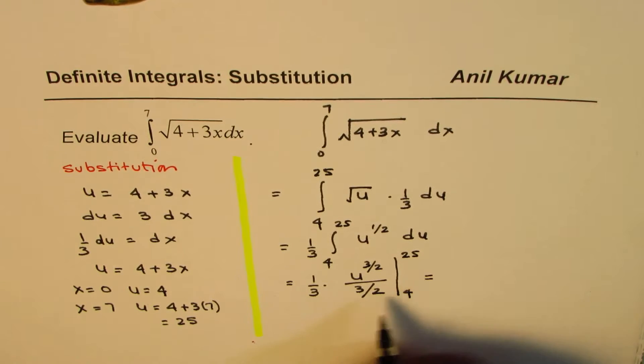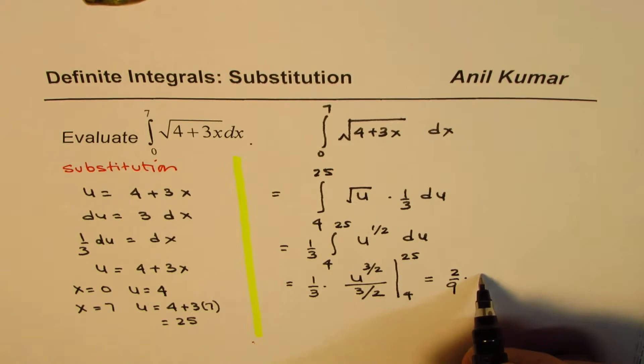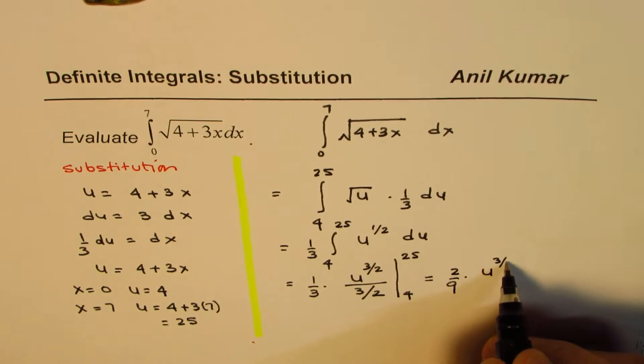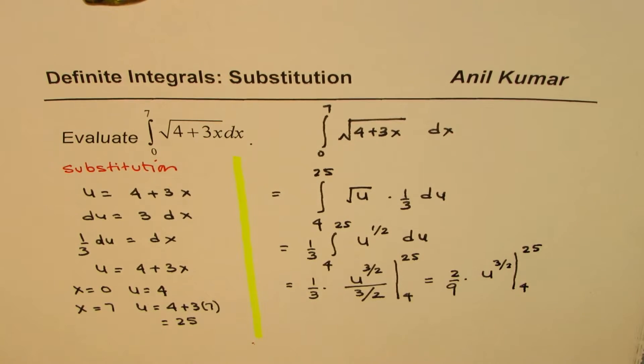Now, this could be simplified. So, you get 2 over 9, u to the power of 3 over 2, from 4 to 25.